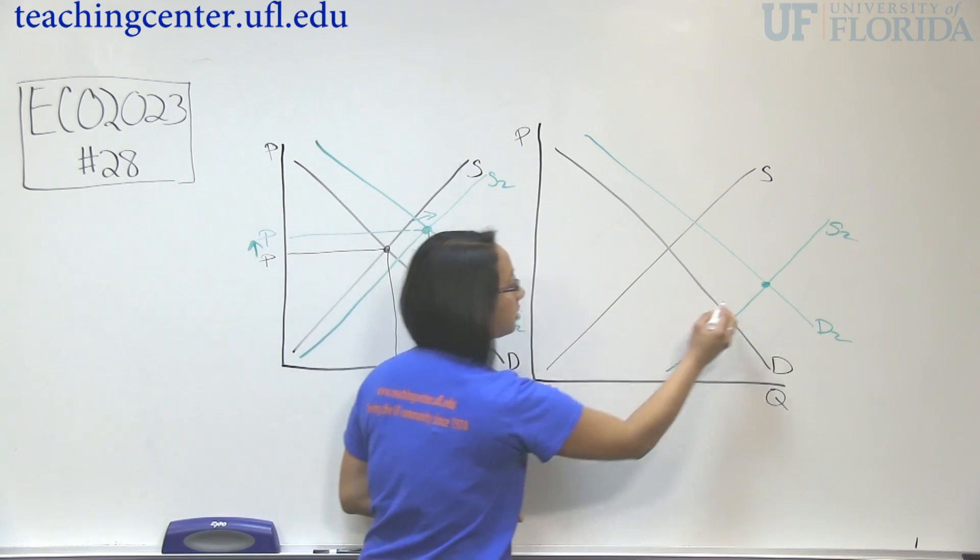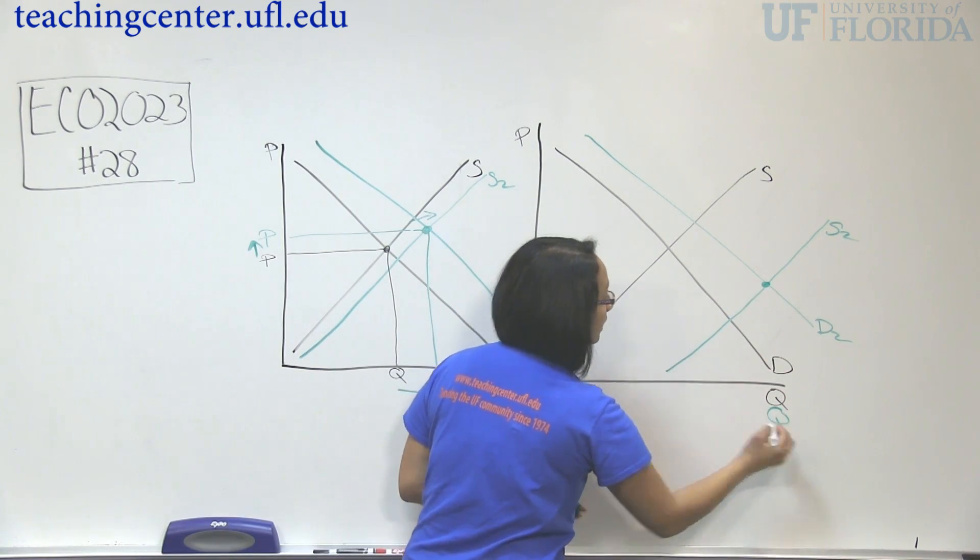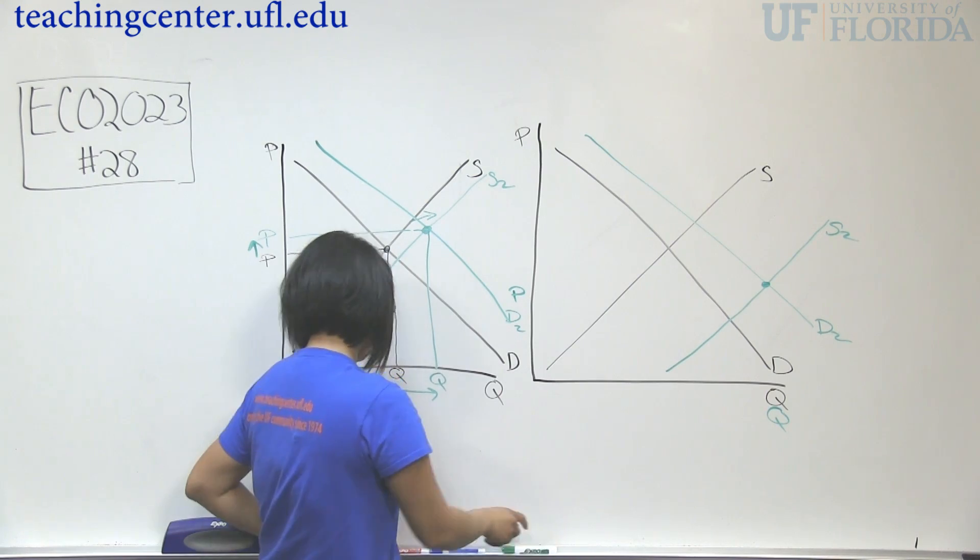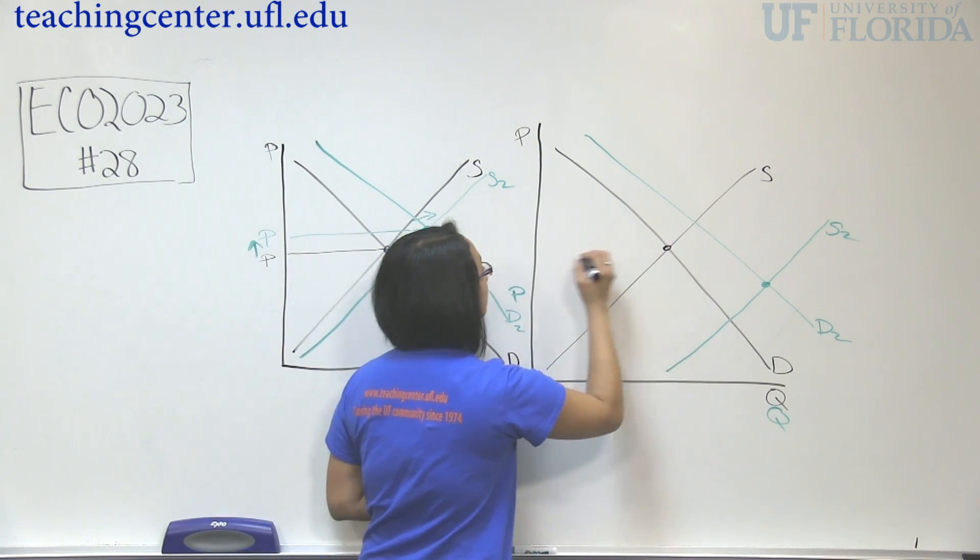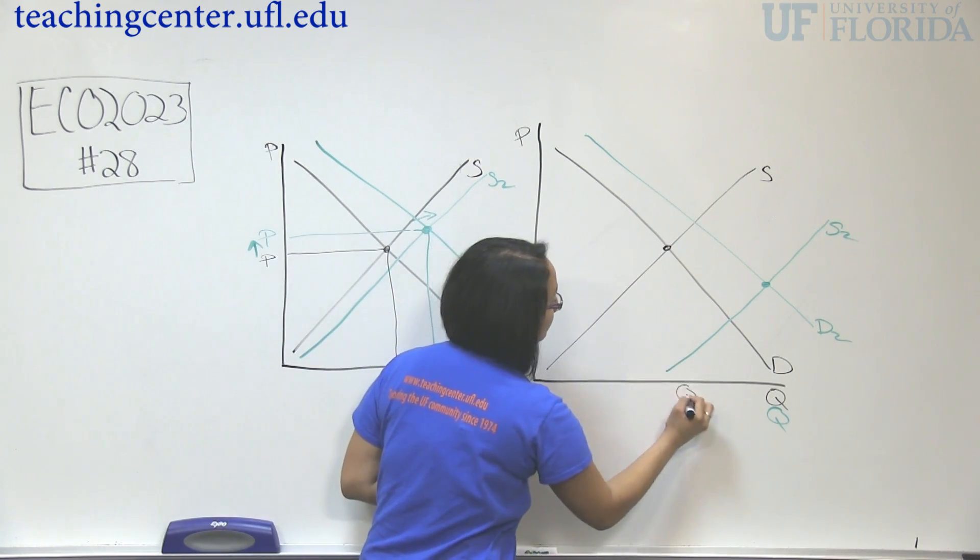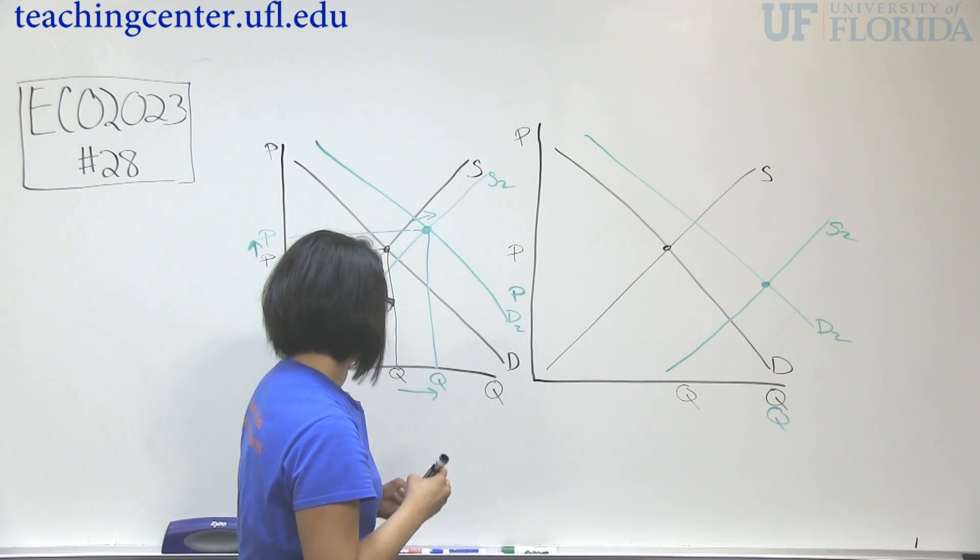So our price is here. Our quantity is about here. Where is that relative to our old point? Here is our price and here is our quantity.